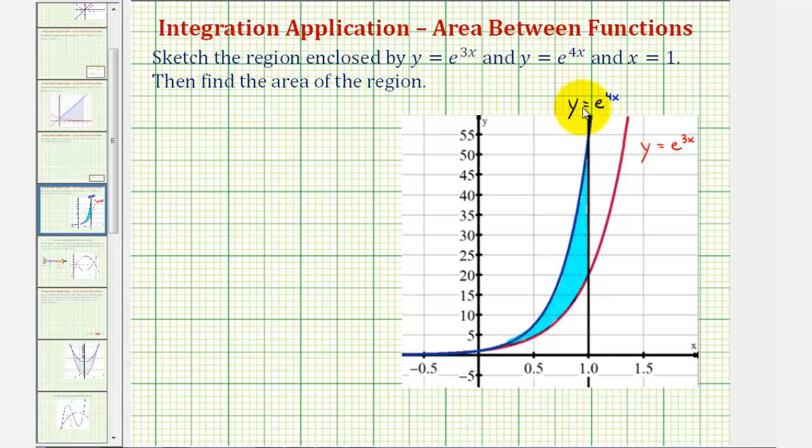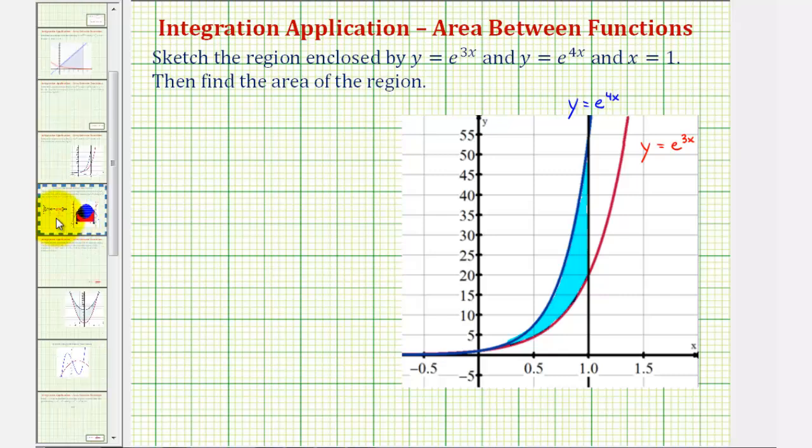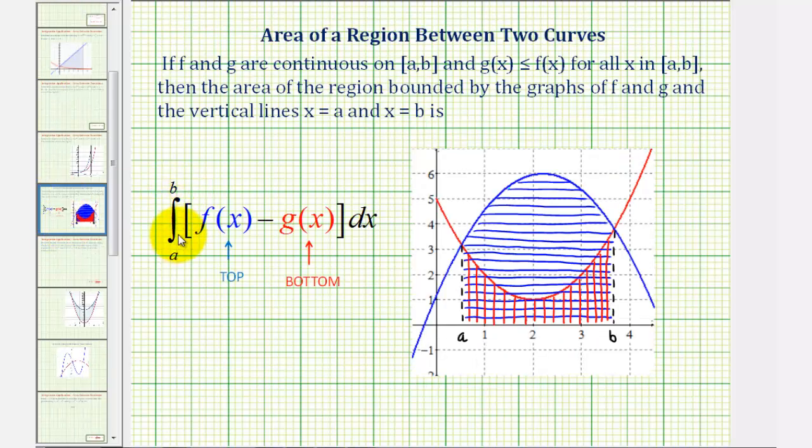It is important to identify which function is on top and which function is on the bottom because when finding the area between two functions, we want to find the integral of f of x minus g of x from a to b where f of x will be the top function and g of x will be the bottom function.